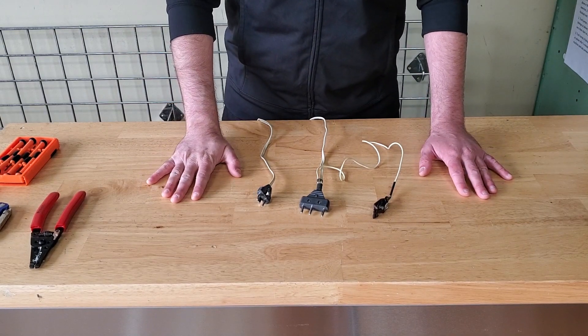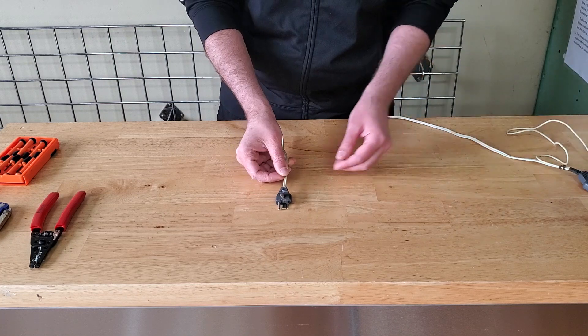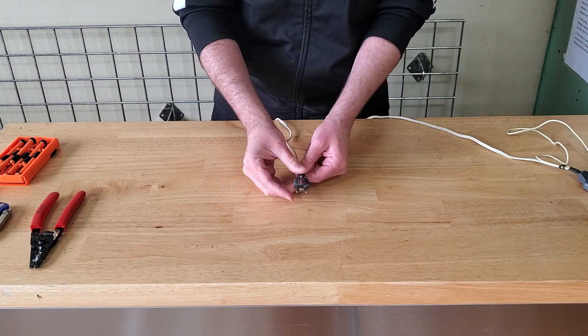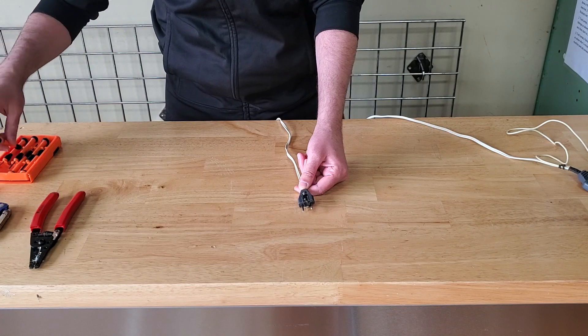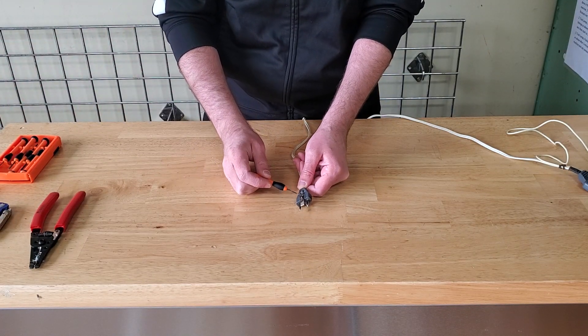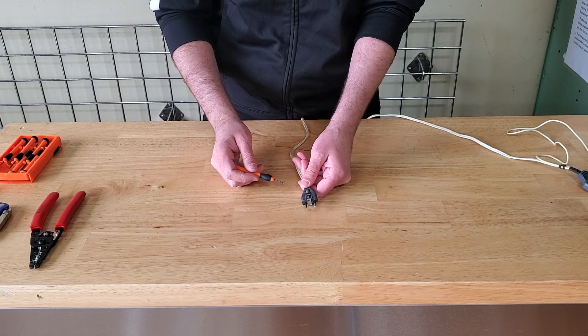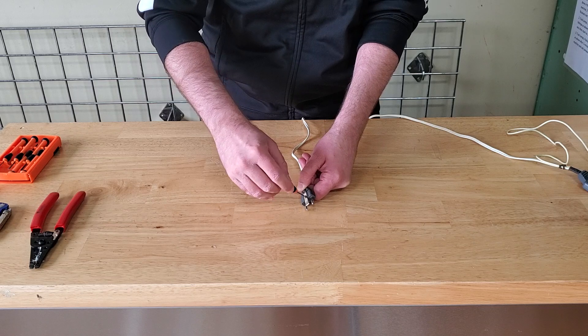The first thing that we're going to need to do is disassemble our two prong end. Grabbing my tiny screwdriver, we need to take off this retaining clip. It is required that you do have a retaining clip for all competitions. So make sure you hang on to that.